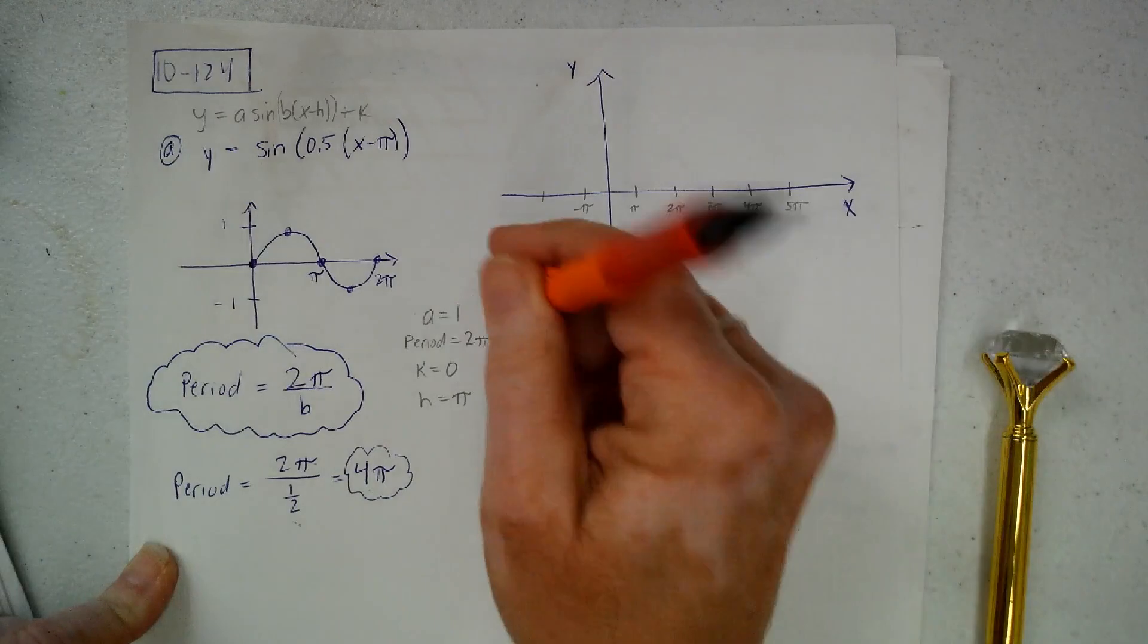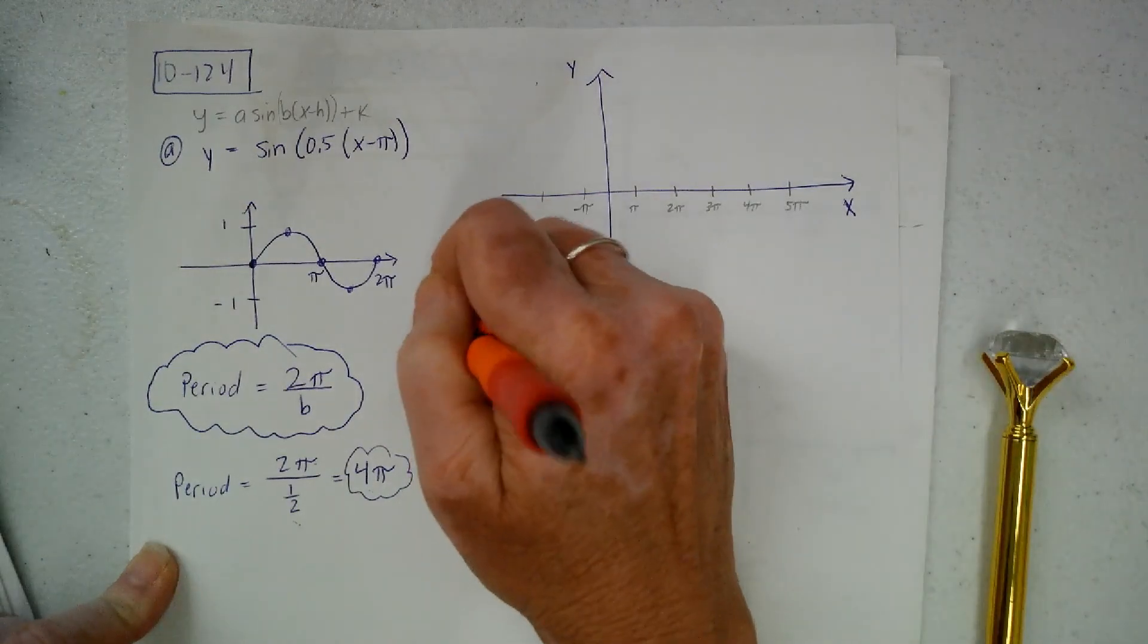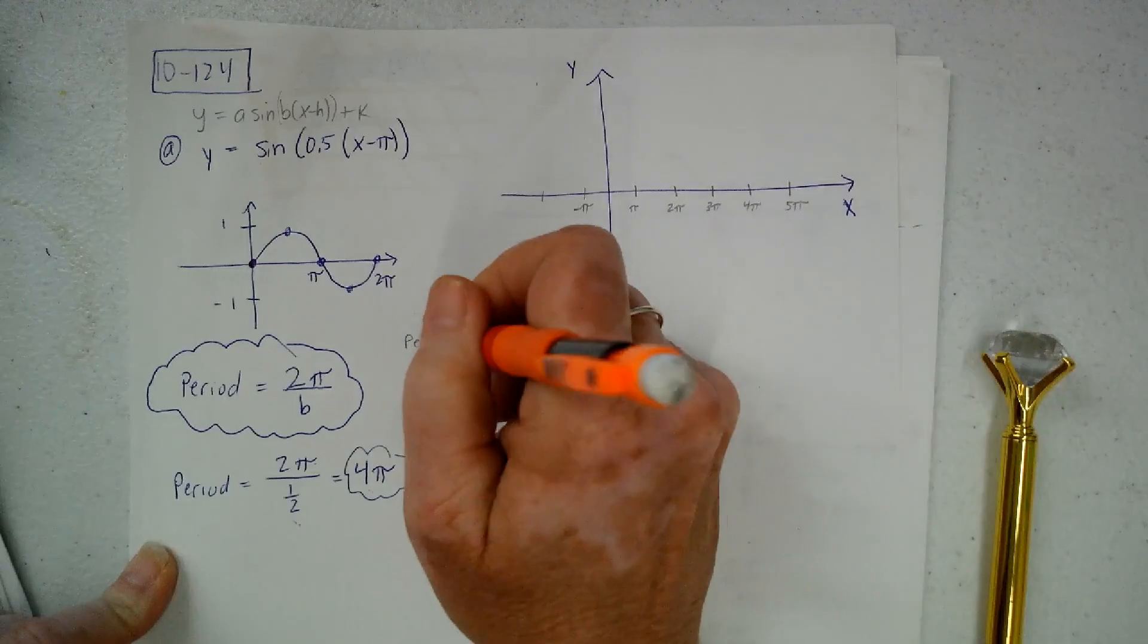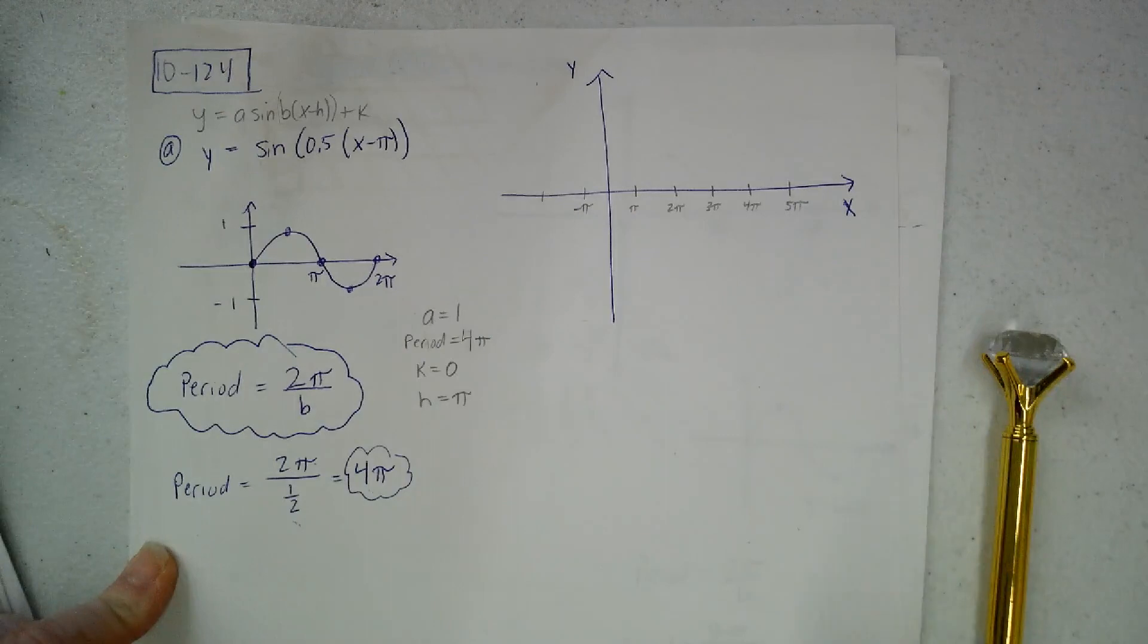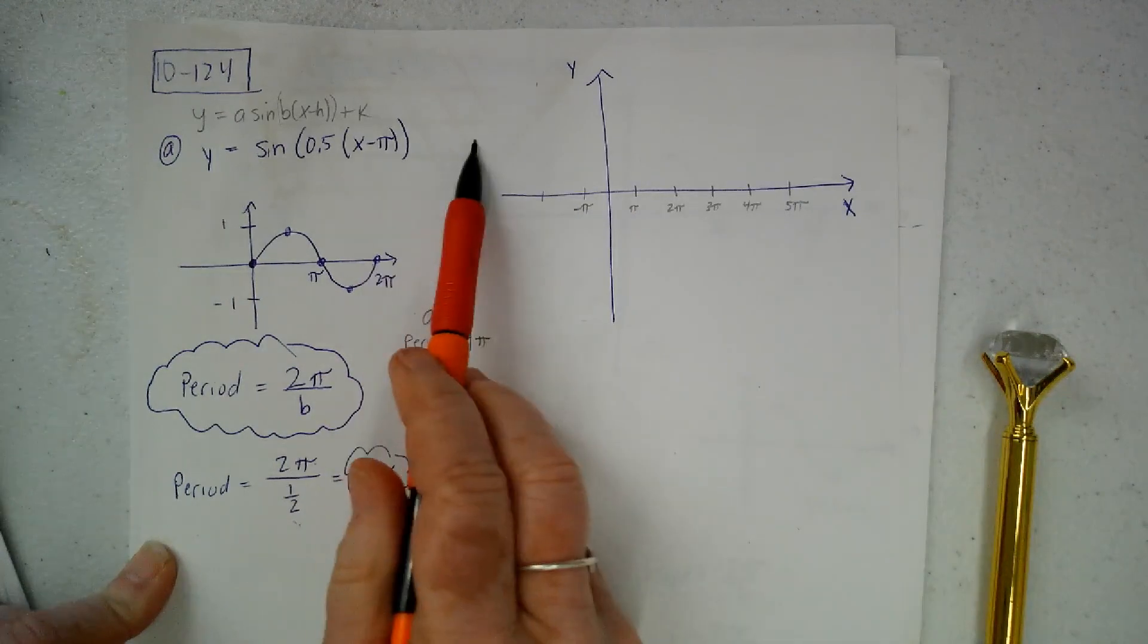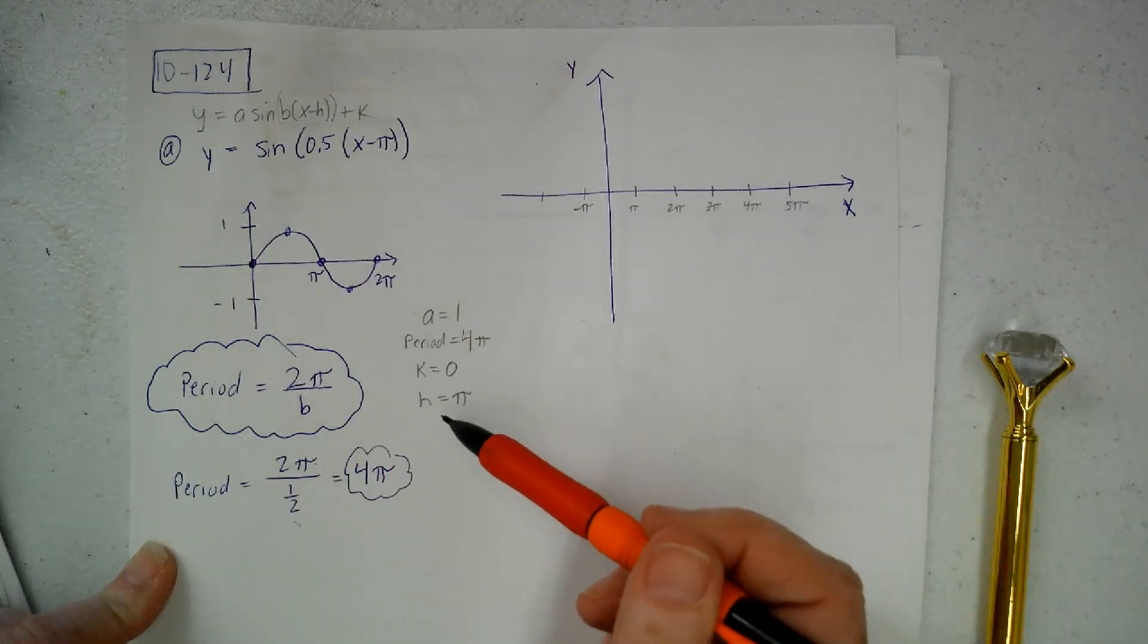Good thing I didn't graph it yet. So the period is 4π. I wrote 2π for some reason. And then K, there's nothing being added on here, so K is 0.